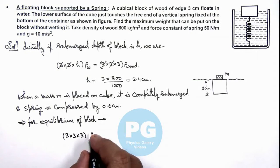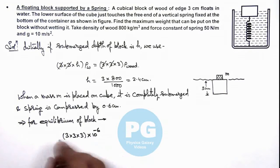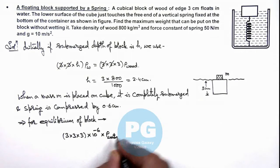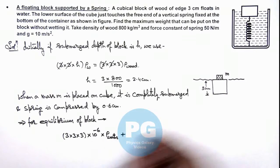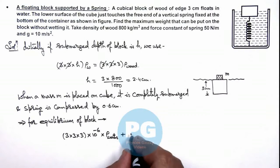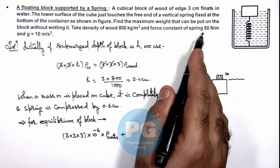We can multiply it by 10 to power minus 6 to keep the parameters in SI unit, multiplied by density of water. Plus this is the buoyant force acting on this block, plus the force applied by the spring here will be kx. The value of k we are given at 50 newton per meter.